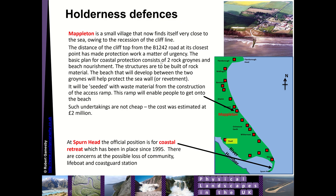Mapleton is a small village that finds itself very close to the sea. The distance from the cliff top to the main road made coastal protection a matter of urgency, so two rock groins and some beach nourishment were put in place to hold the sea back — costing two million pounds. At Spurn Head in the south, the official position has been coastal retreat since 1995.